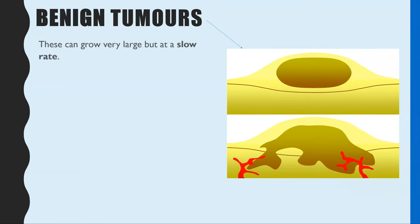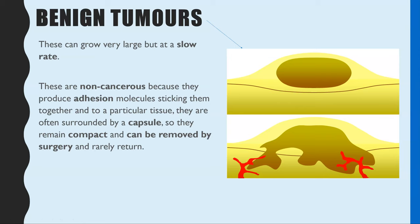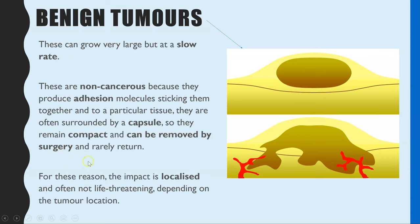Benign tumors can grow potentially large, but at a very slow rate. They are non-cancerous, and that is due to some key properties. Benign tumors produce an adhesion molecule — a sticky substance — that causes the tumor cells to stick together and also stick to a particular location in the body. These tumors are also often surrounded by a membrane or capsule, which keeps the tumor in one place so it cannot break off and spread. That makes it much easier to remove by surgery, and they are very unlikely to return. The impact of a benign tumor is therefore localized to the area where it is growing.